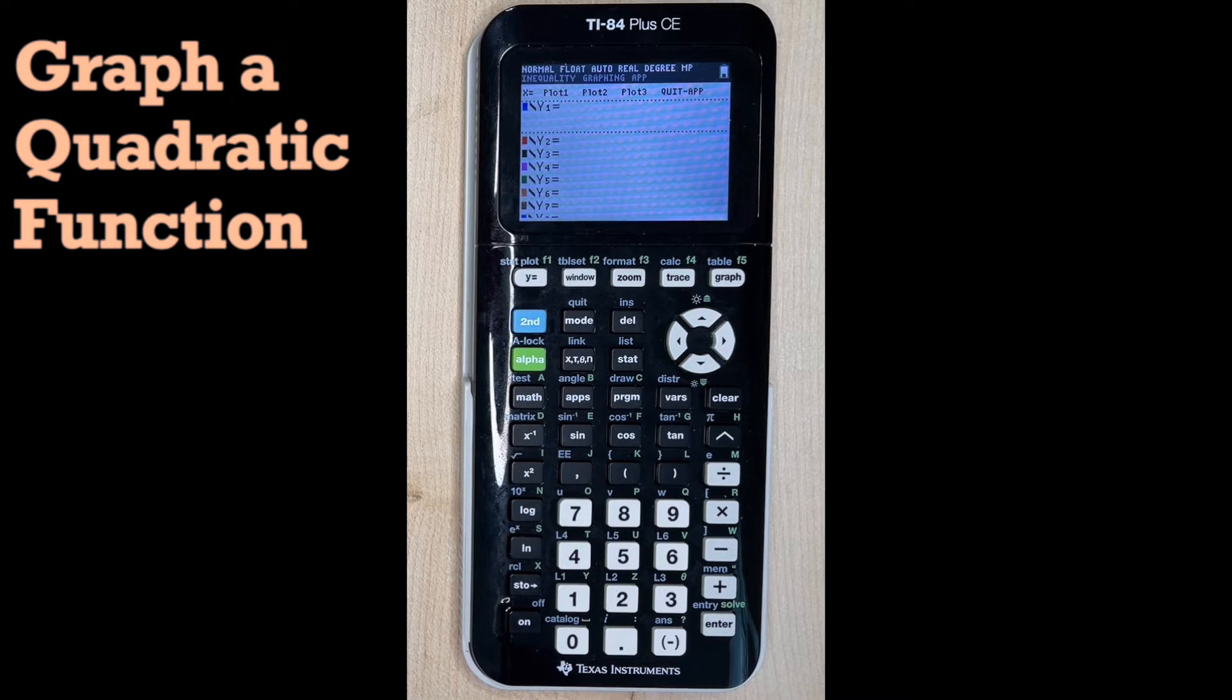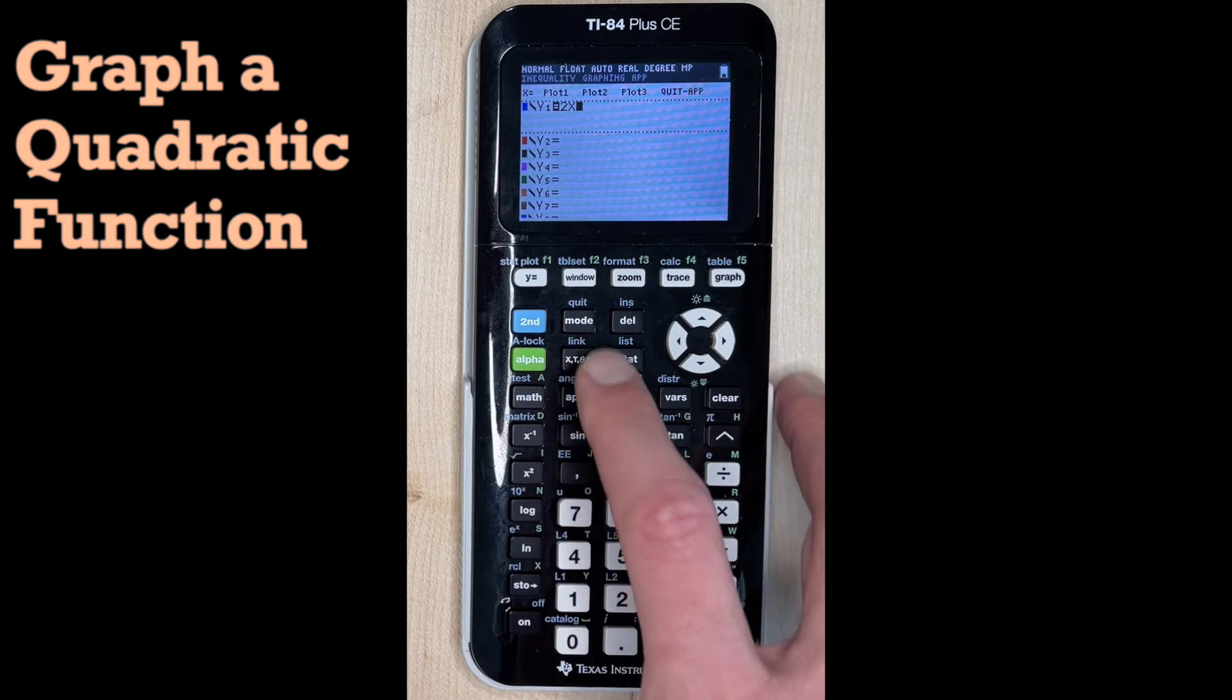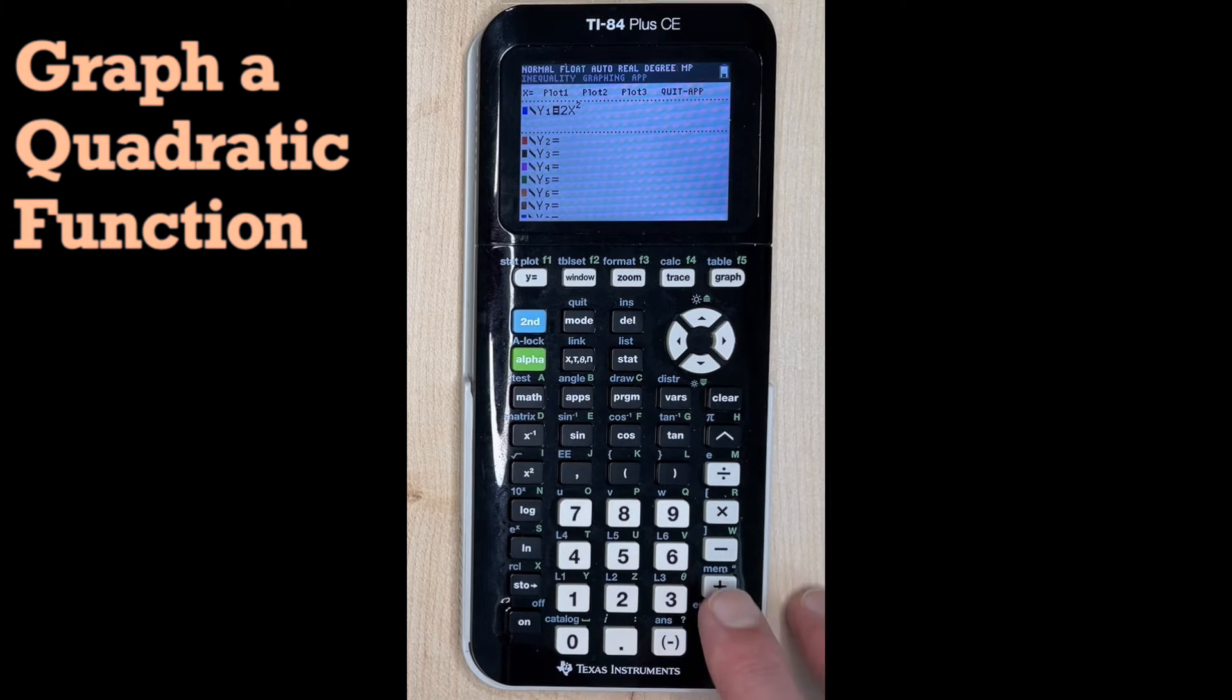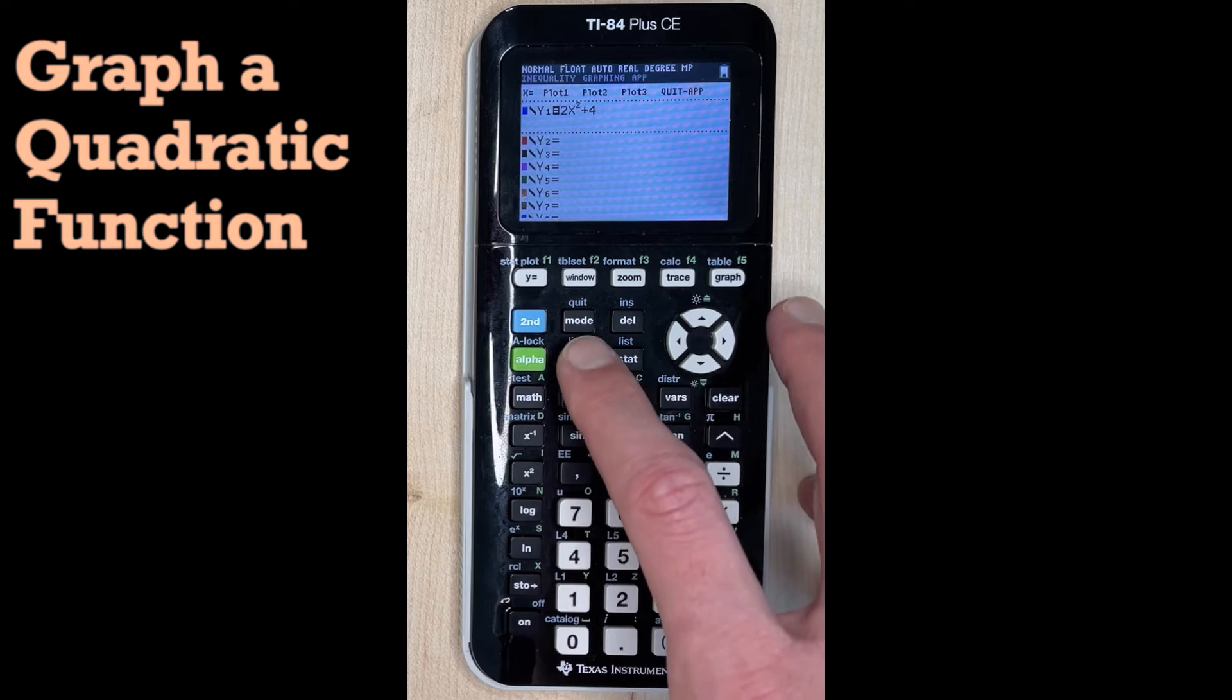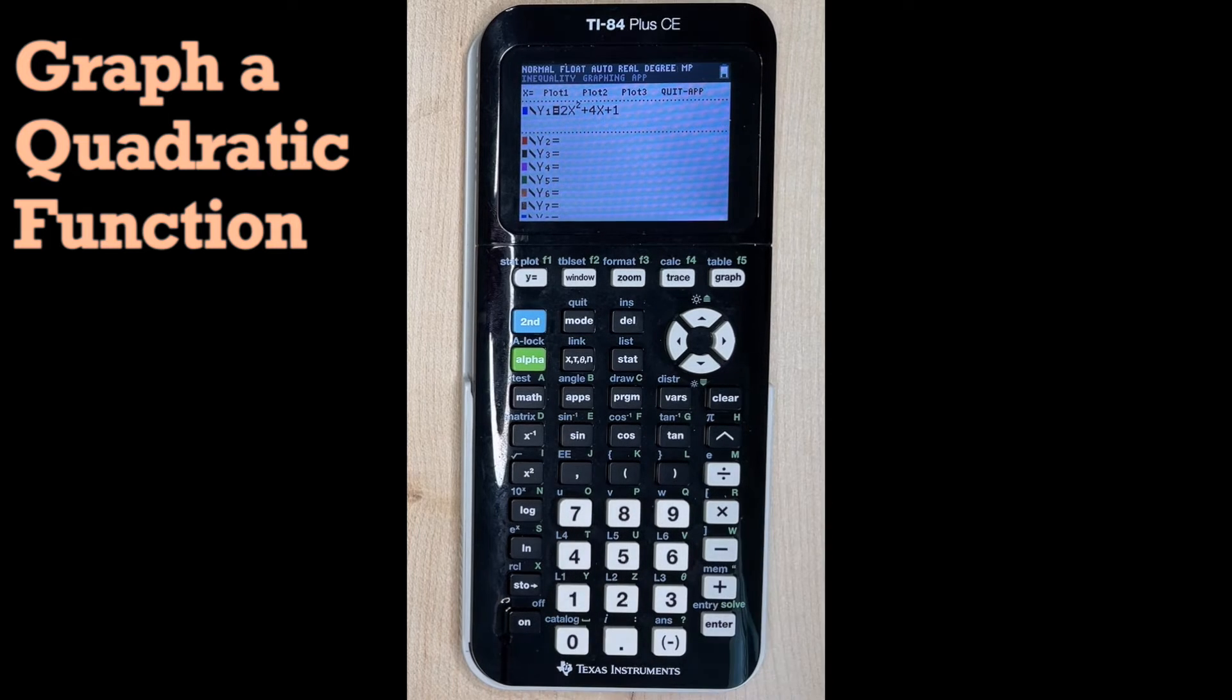The quadratic that we're going to graph is 2x² + 4x + 1. So there's our quadratic. Now we just hit graph.